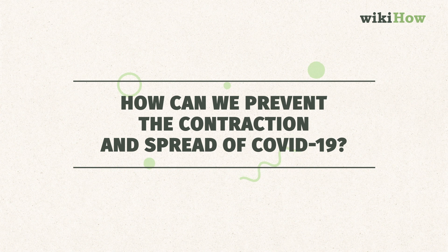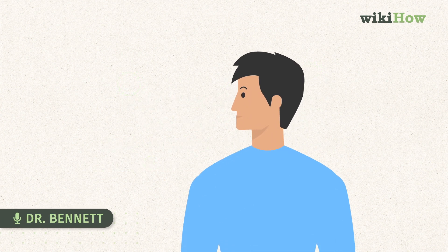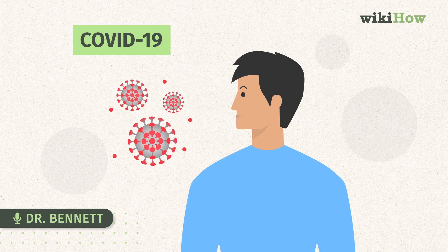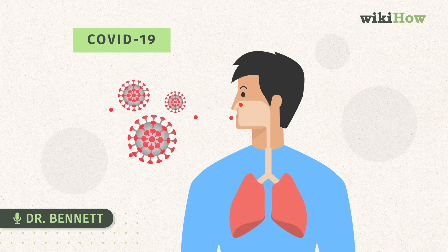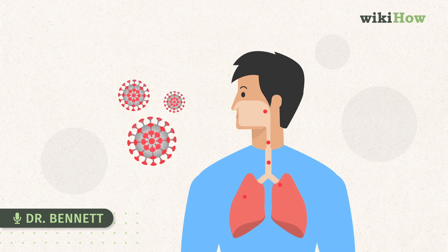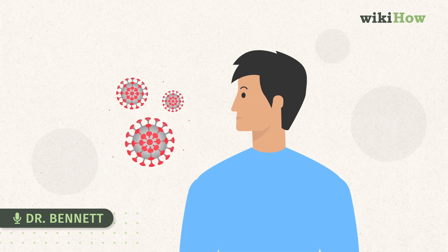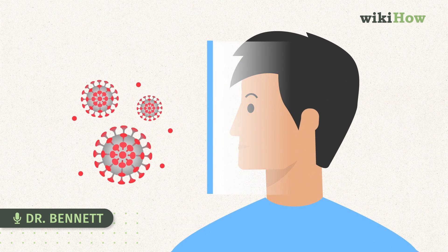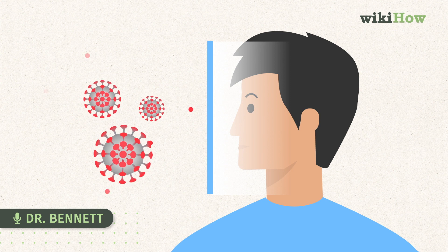How can we prevent the contraction and spread of COVID-19? The coronavirus is getting into our cells, particularly our respiratory tissues. So that means we need to protect ourselves from introducing the virus into our respiratory tissues.